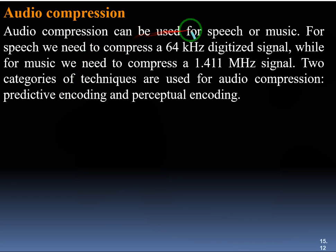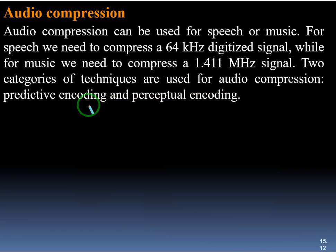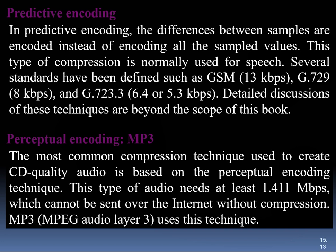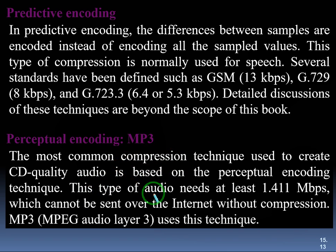Audio compression can be used for speech or music. For speech we need to compress a 64 kilohertz digitized signal, while for music we need to compress a 1.411 megahertz signal. Two categories of techniques are used: predictive encoding, where differences between samples are encoded rather than all sample values — normally used for speech (e.g., GSM standard); and perceptual encoding, such as MP3, which is the most common technique for CD-quality audio and requires at least 1.411 megabits per second.